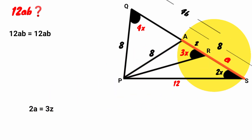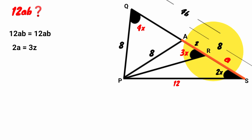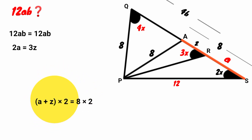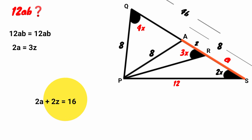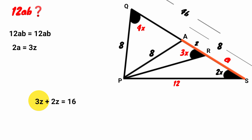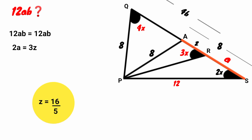Now back to this side — its length is 8 units, but it is divided into A and Z, so their sum equals 8: A plus Z equals 8. Multiply through by 2: 2A plus 2Z equals 16. Recall that 2A equals 3Z, so we replace 2A with 3Z: 3Z plus 2Z equals 5Z. So 5Z equals 16. Dividing both sides by 5: Z equals 16 over 5.